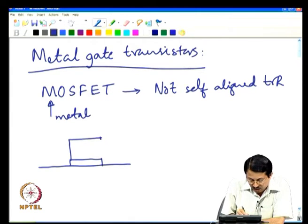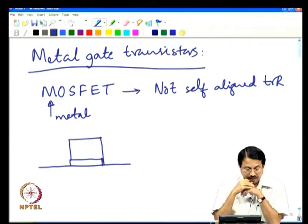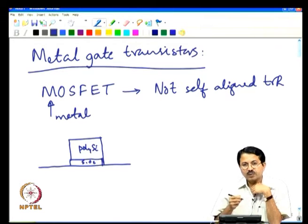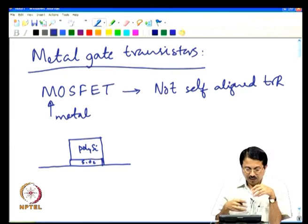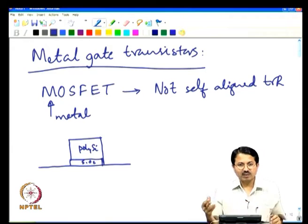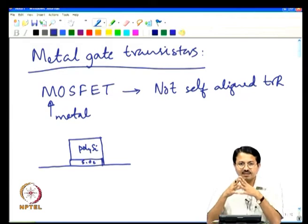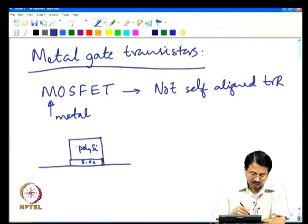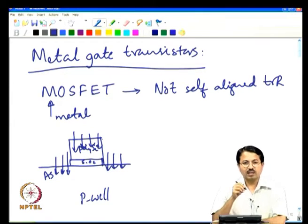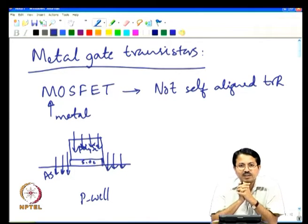In polysilicon gate transistors we have today, the gate stack includes SiO2 — or high-K now — and polysilicon. You do ion implantation: you convert polysilicon into N+ or P+, making it heavily doped polysilicon, and that is done along with the source-drain implant. Polysilicon was deposited as intrinsic, but for an NMOS region, arsenic is implanted — it comes into the source, drain, and also into the gate region — converting the gate into an N+ doped region.